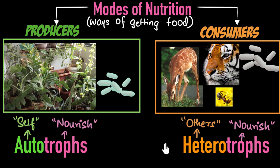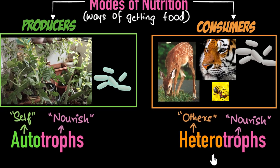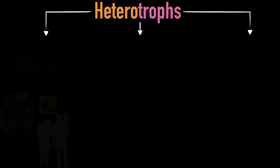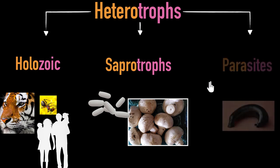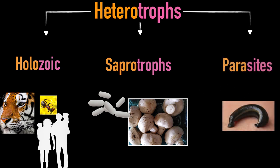Now, guess what? Based on how heterotrophs eat, we can further classify them into three categories: holozoic, saprotrophs, and parasites. Let's look at each one in detail.